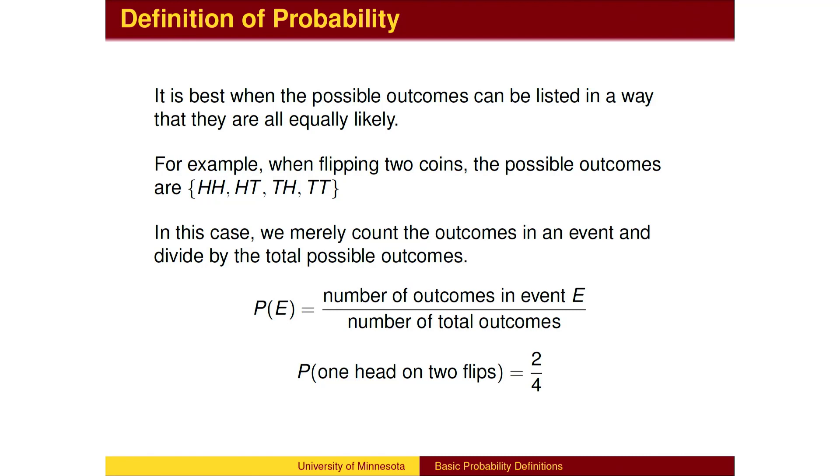For example, when flipping two coins, there are four equally likely outcomes, two of which result in one head and one tail.